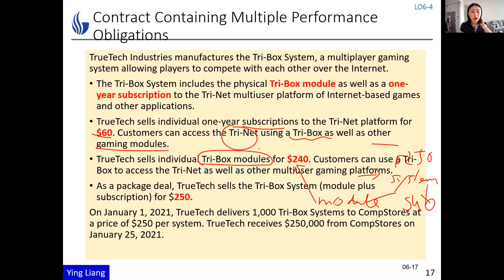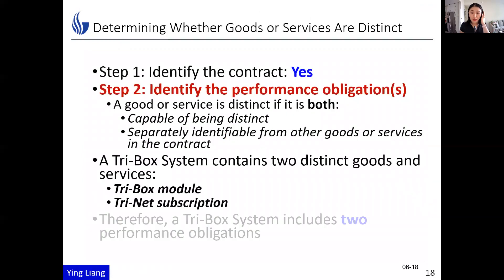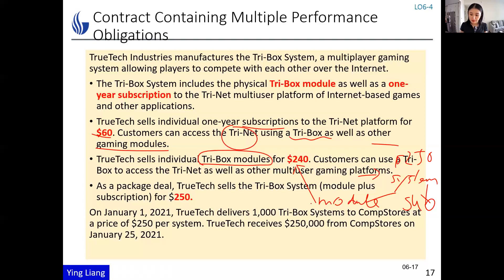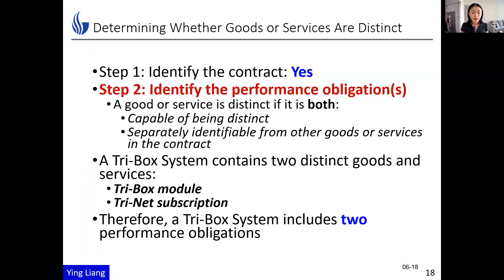How many performance obligations are there in the system? You have the physical module which can be bought separately for $240, and the subscription which can also be bought separately for $60, but together the system costs $250. The good or service is distinct when it is capable of being distinct — you can buy it separately and use it on other gaming platforms — and separately identifiable from other goods or services in the contract. Since you have two separate items, this TryBox system has two distinct goods and therefore includes two performance obligations.